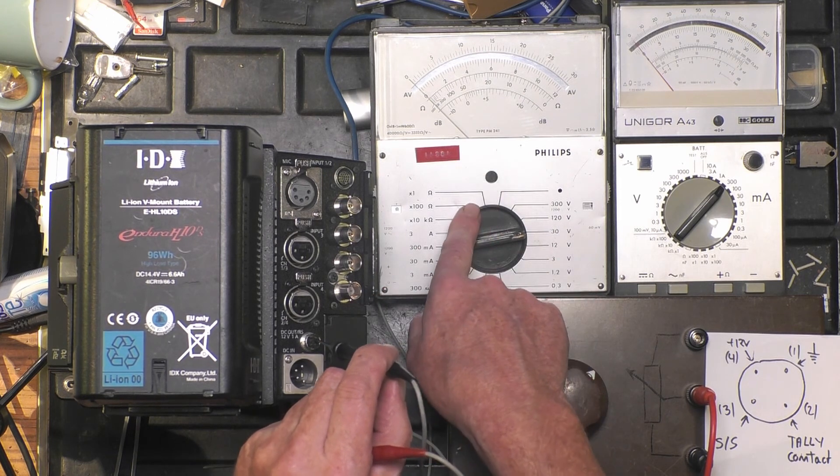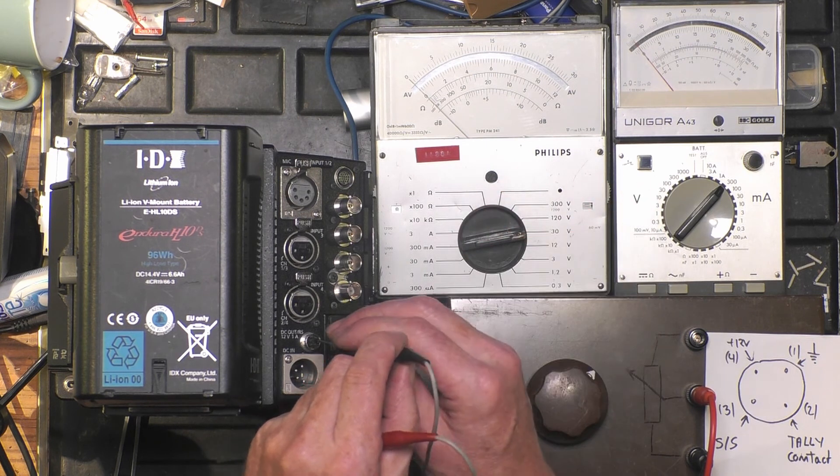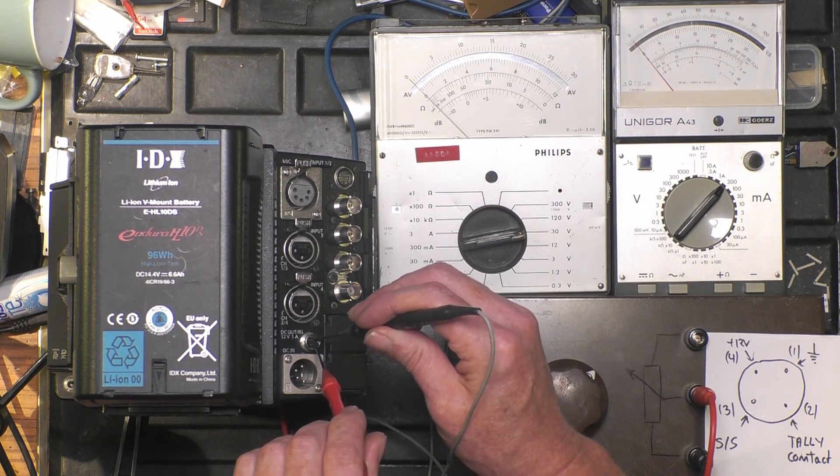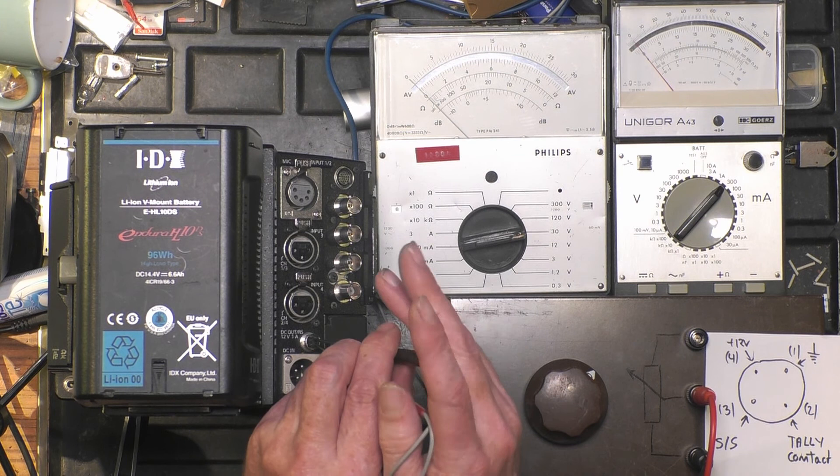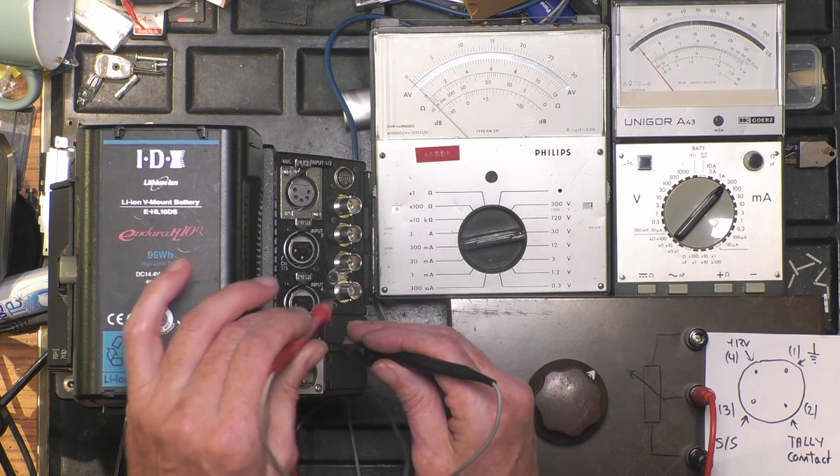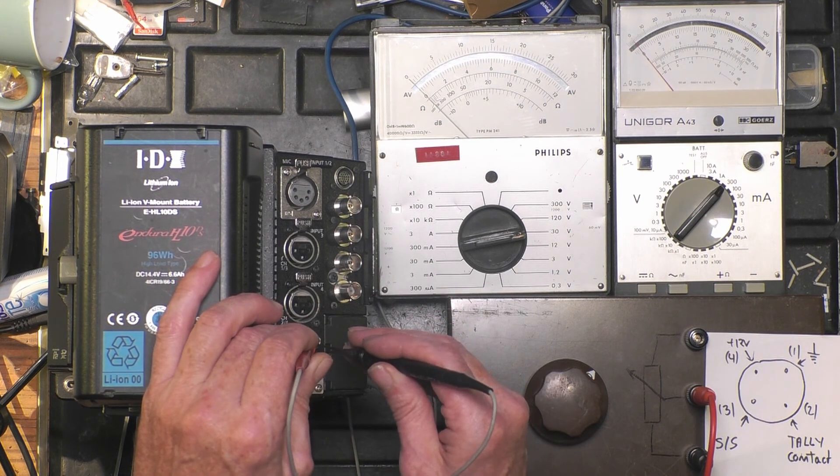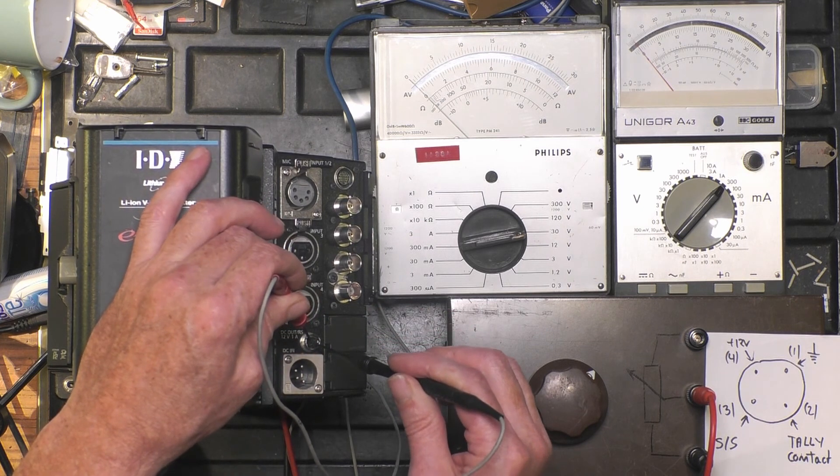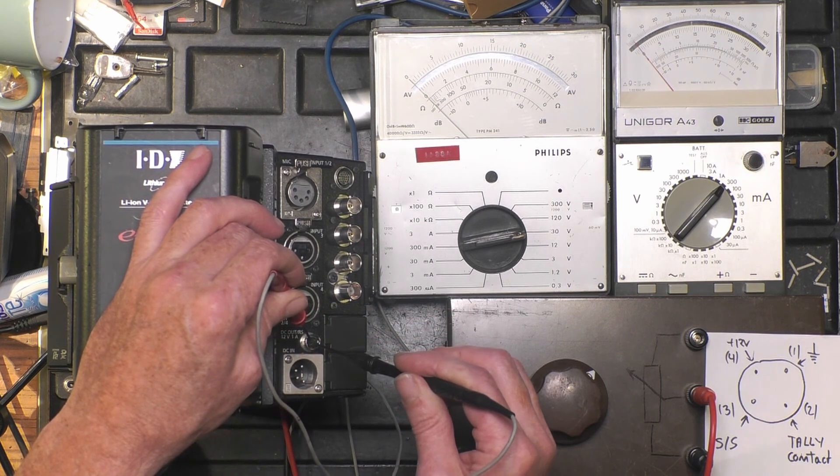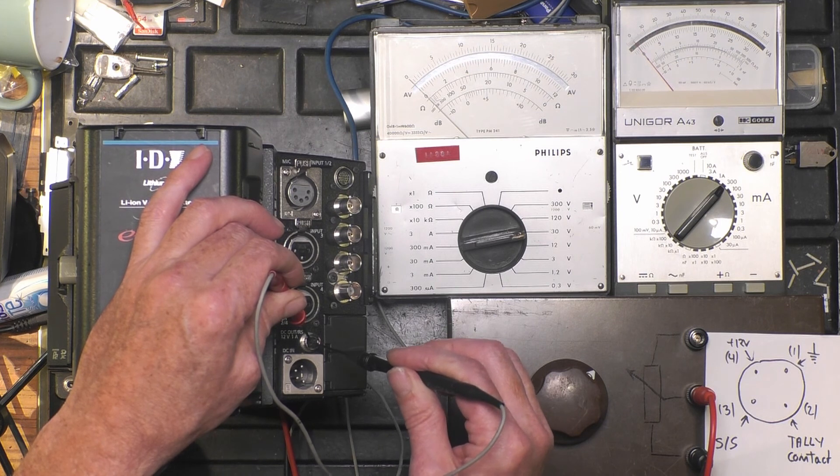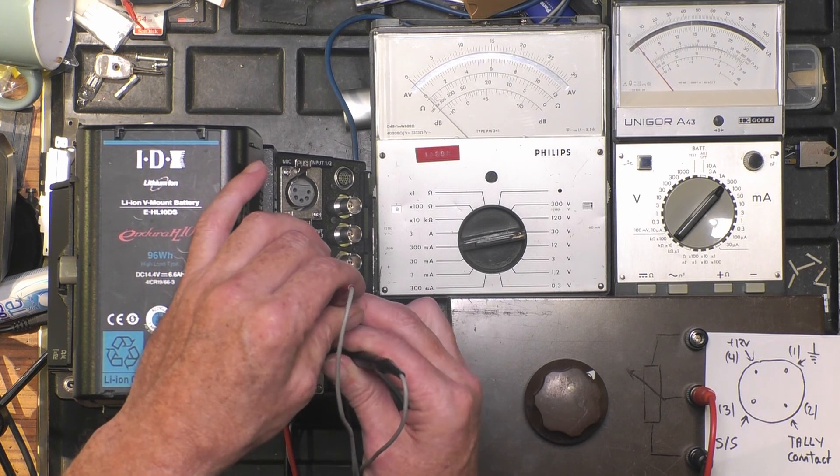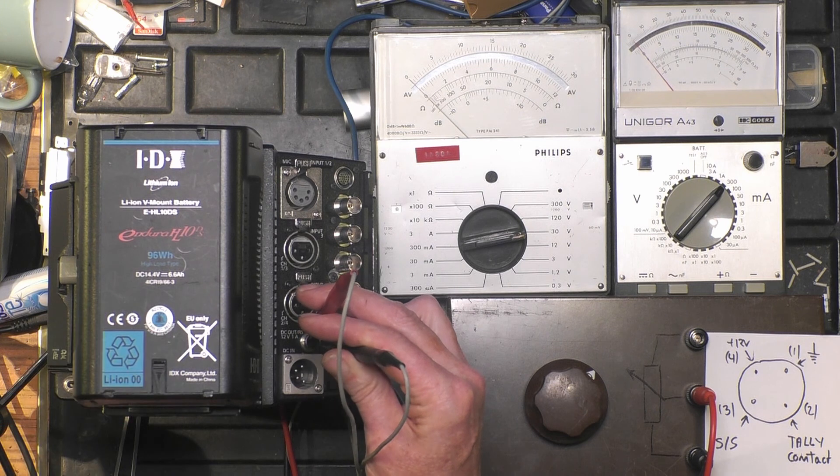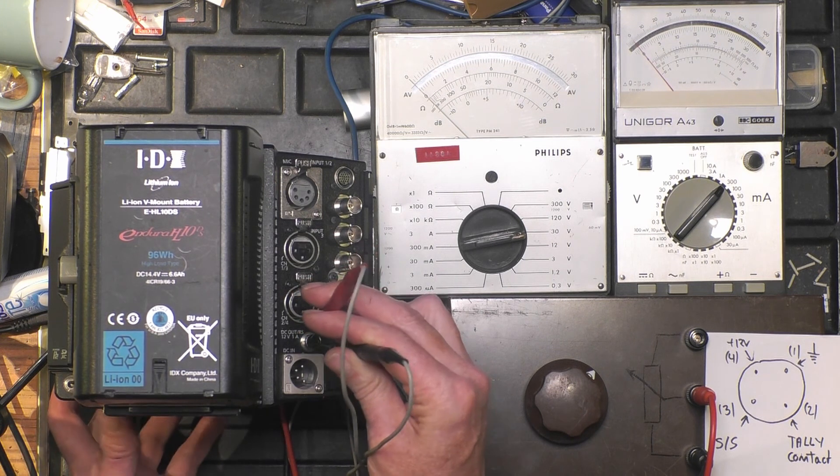So we are on voltage and current. At this moment there is no voltage. Indeed, I'm connected, plus button for the 12 volt and the black one to pin 2, the tally. There is no voltage over this simultaneously, and there is no current. It's normal, the Varicam is not recording. I push record.